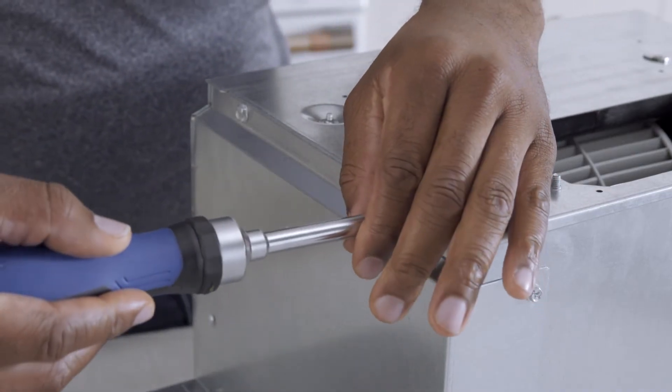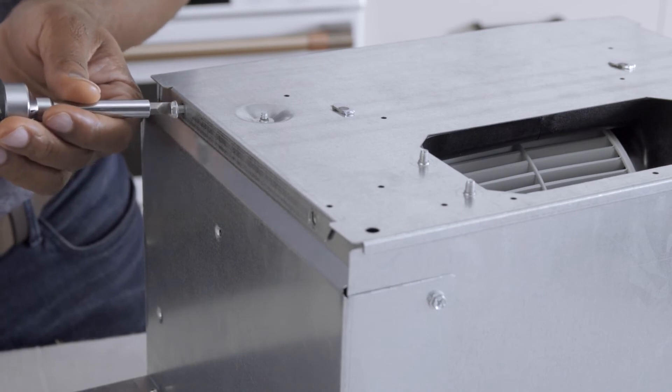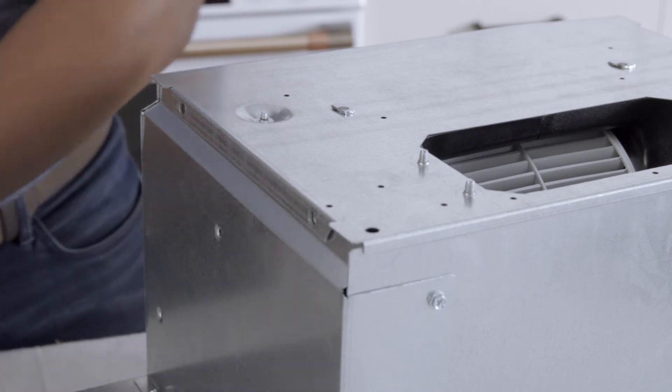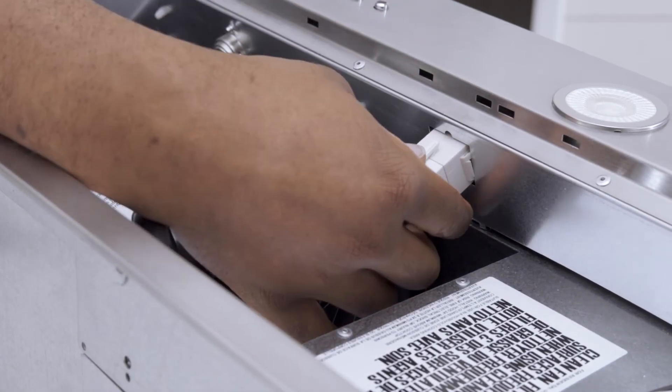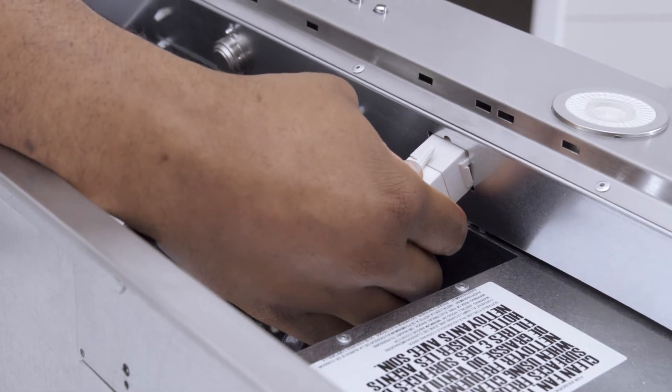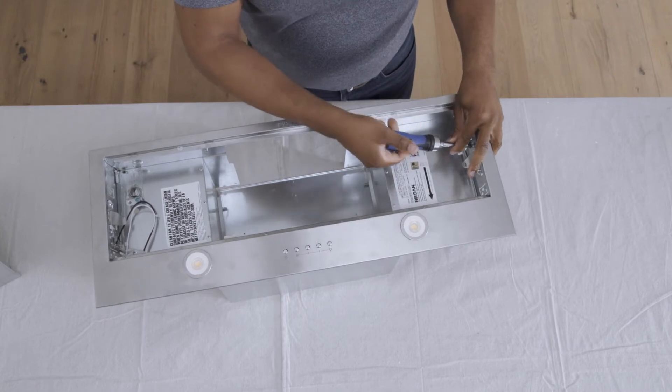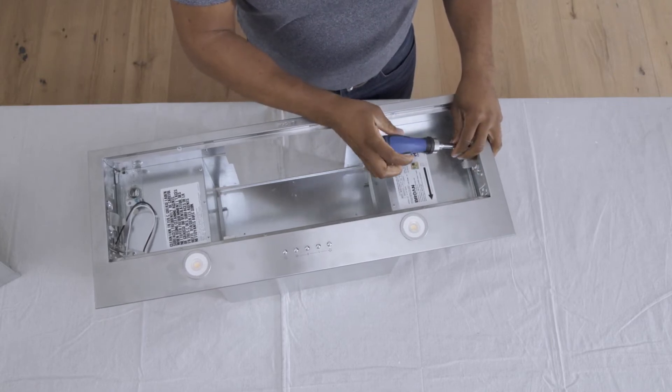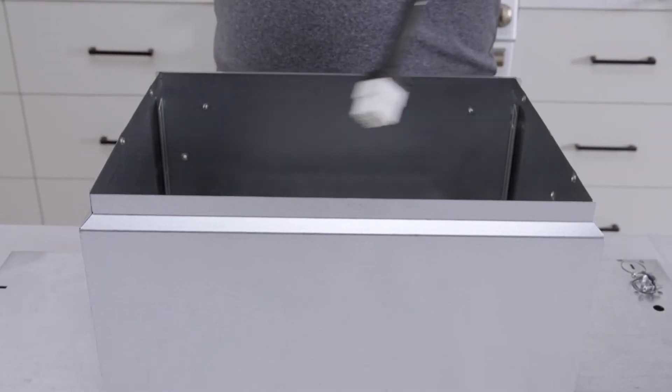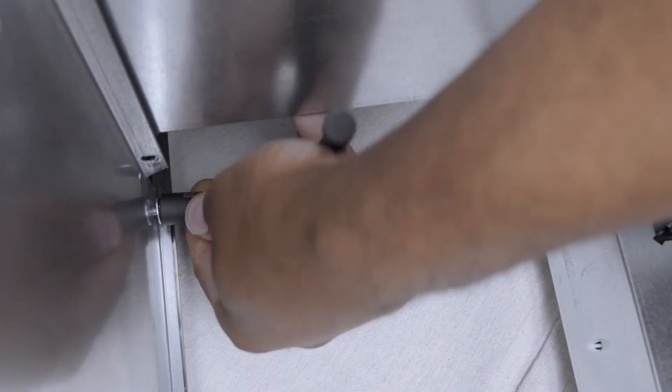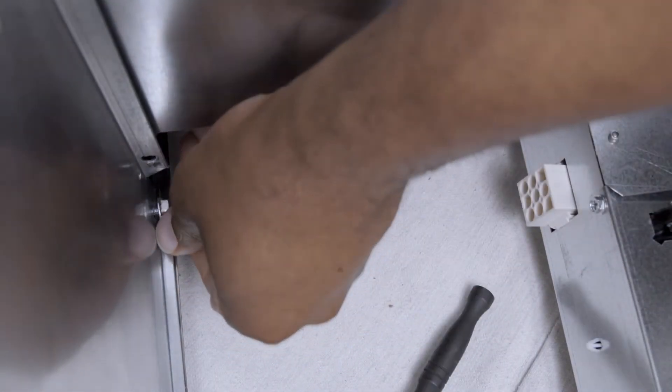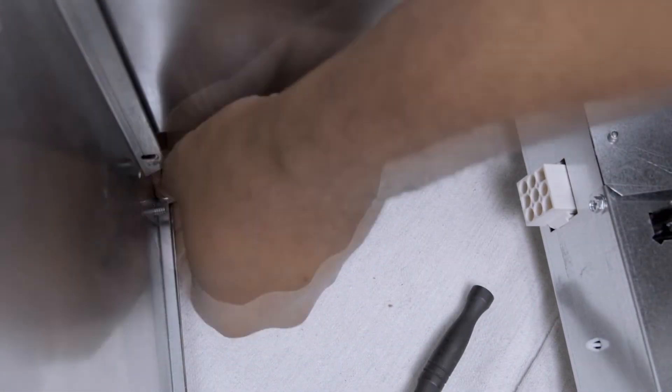To switch the unit to the optional horizontal exhaust, remove the four retaining screws from the faceplate. Then, unplug the blower cable from its connector on the faceplate. Remove the four screws from the support plate on the top of the unit. The blower will be reinstalled later. Detach the backplate by removing both retaining nuts using a 3/8 inch socket.